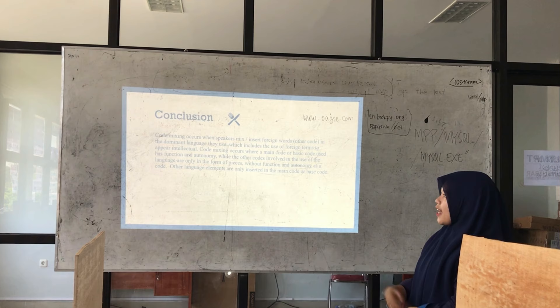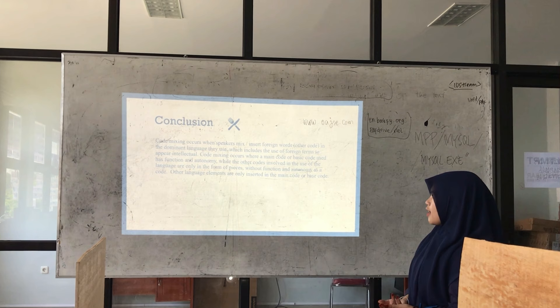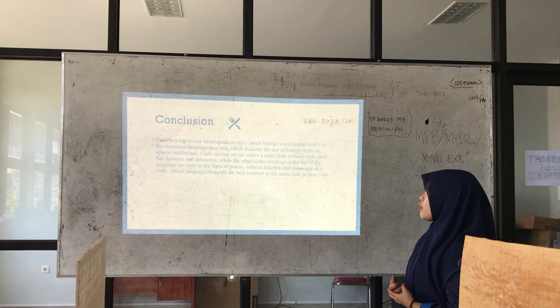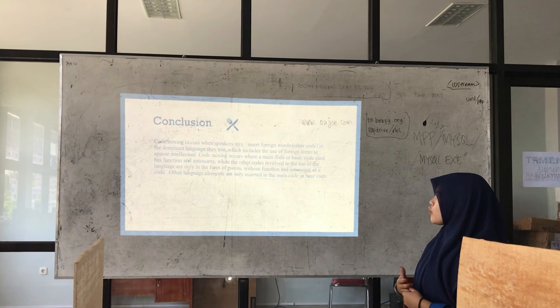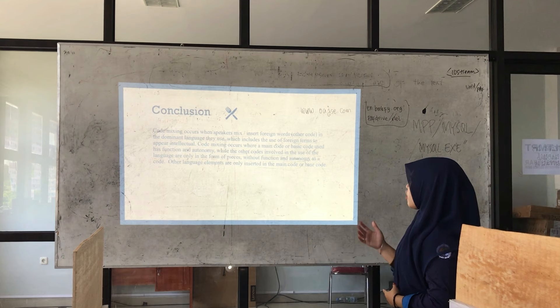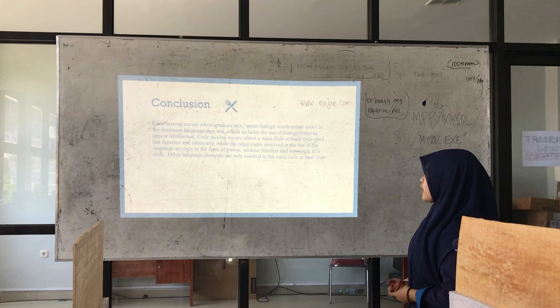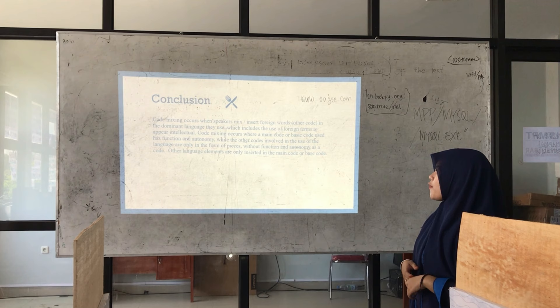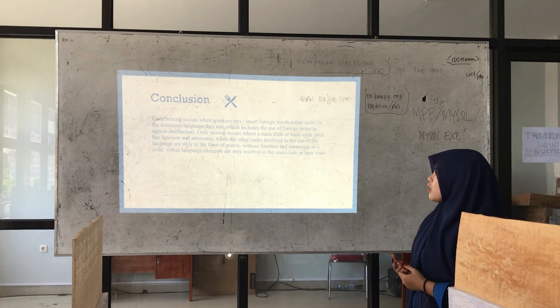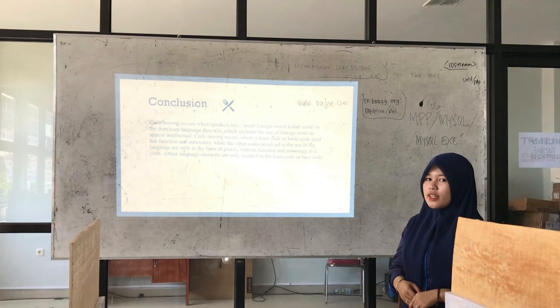Conclusion. Code-mixing occurs within a speaker who inserts foreign words or other codes in the dominant language they use, which includes the use of foreign terms to appear intellectual. Code-mixing occurs when there is a main code or base code that has function and autonomy, while the other codes input in the use of the language are only in form and spaces, without function and autonomy as a code. Other language elements are only inserted in the main code or base code.